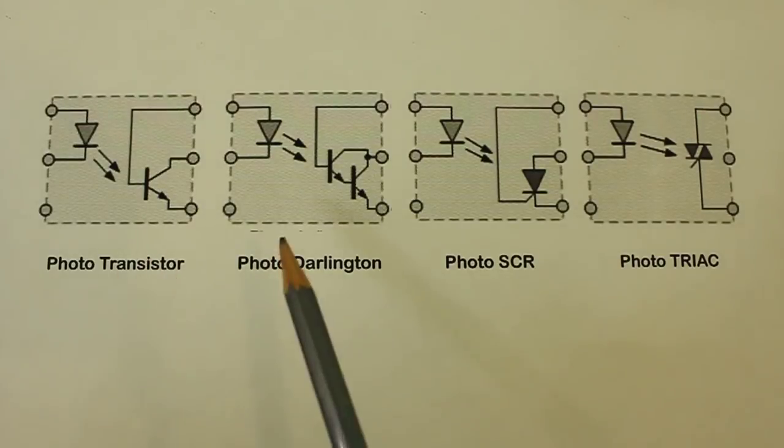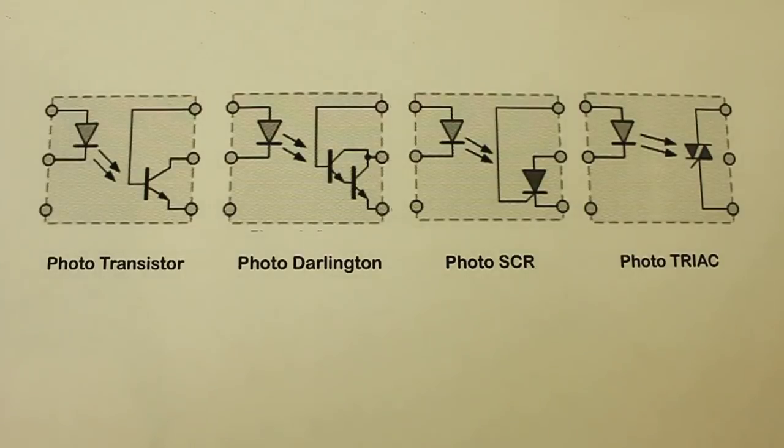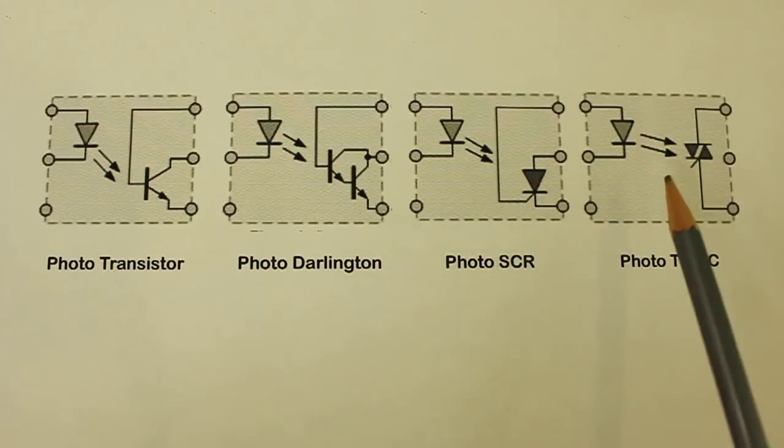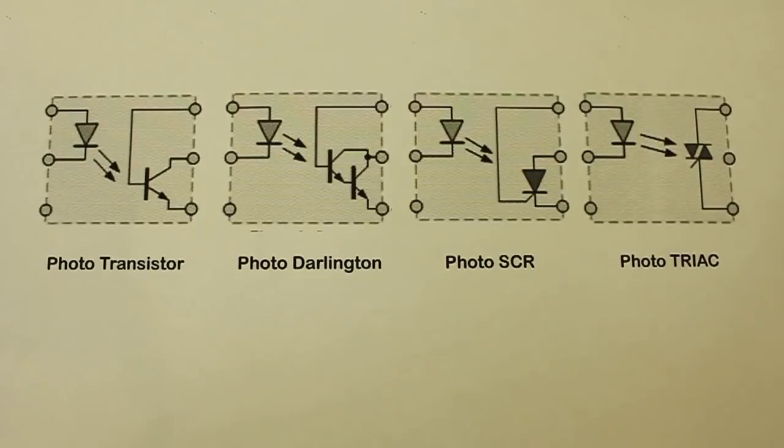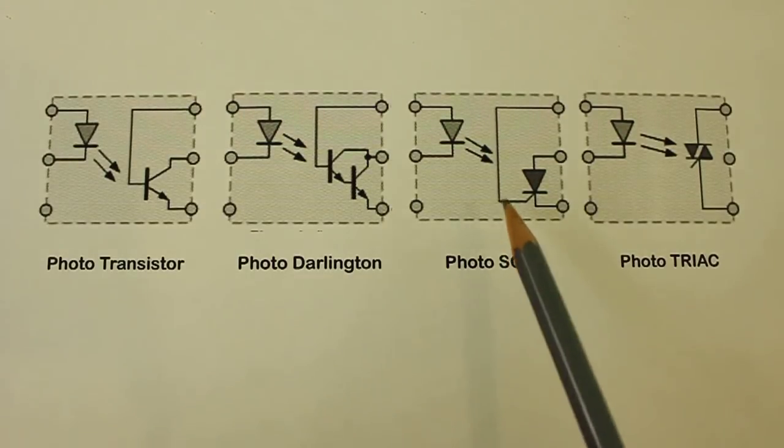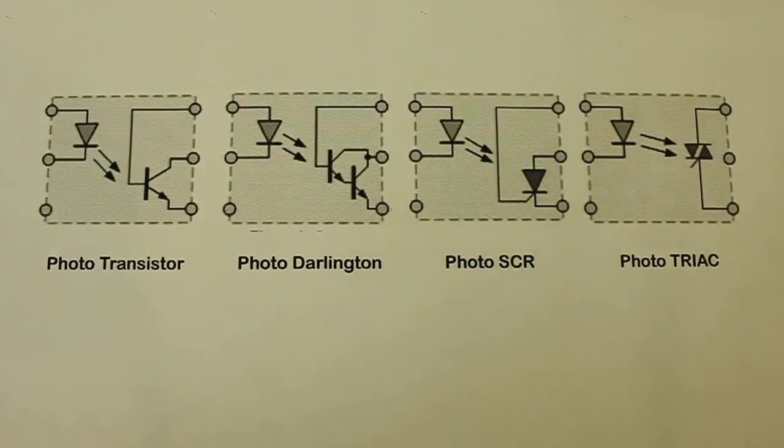These two types are used when you need to control a load that uses DC. In the case that your load is AC, there are these other two types, the photo SCR and the photo triac. As the name implies, they internally have a light sensitive SCR and a light sensitive triac.